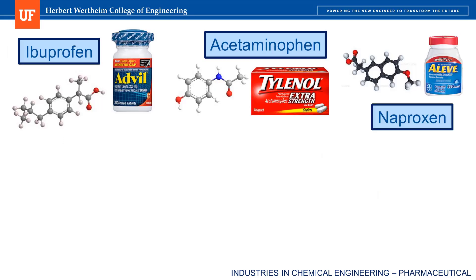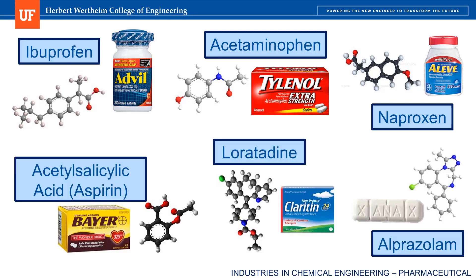Let's look at some other examples of APIs. Ibuprofen is sold as Advil. Another API for pain relief is acetaminophen, more commonly known under the brand name Tylenol. There is also naproxen, which is sold as Aleve. Yet a fourth non-steroidal anti-inflammatory is acetylsalicylic acid, or aspirin. These names are all very fun to say once you know how to pronounce them.